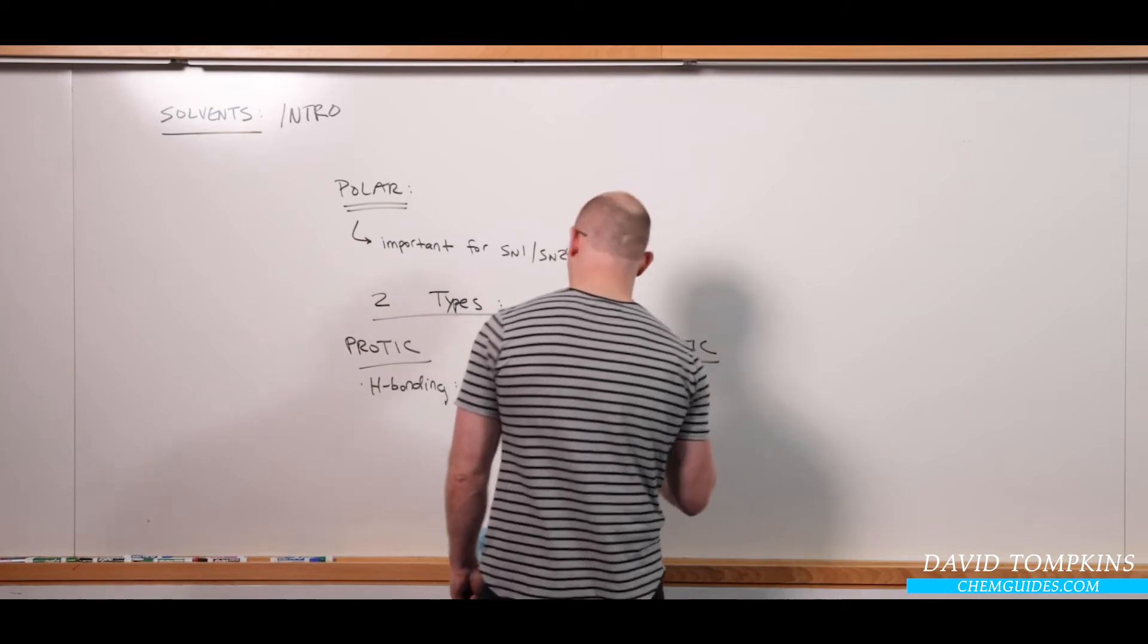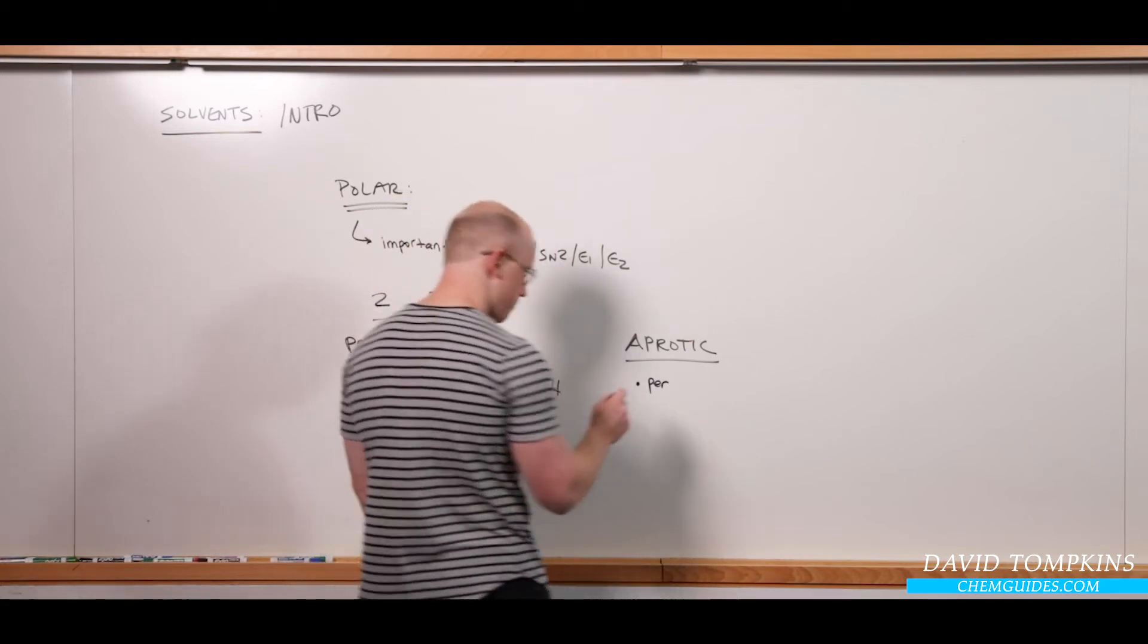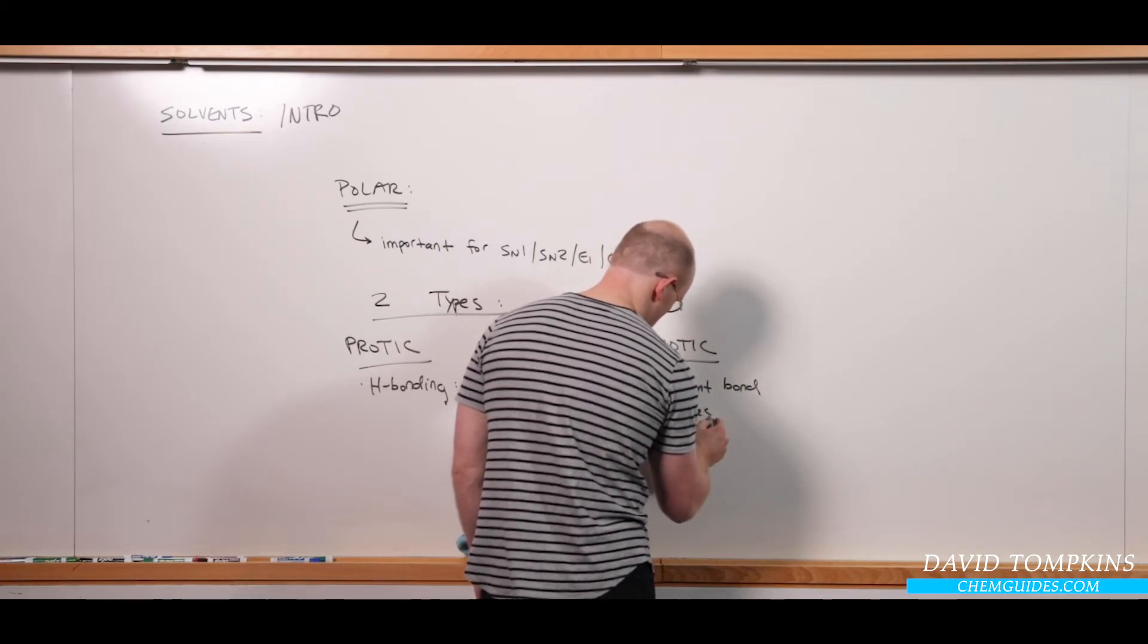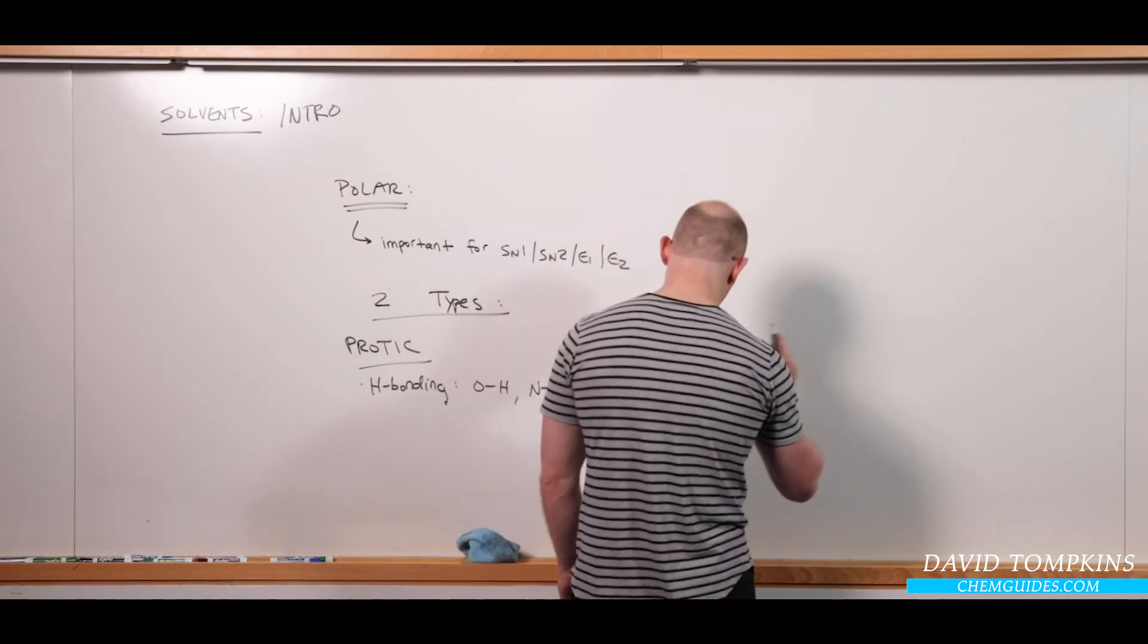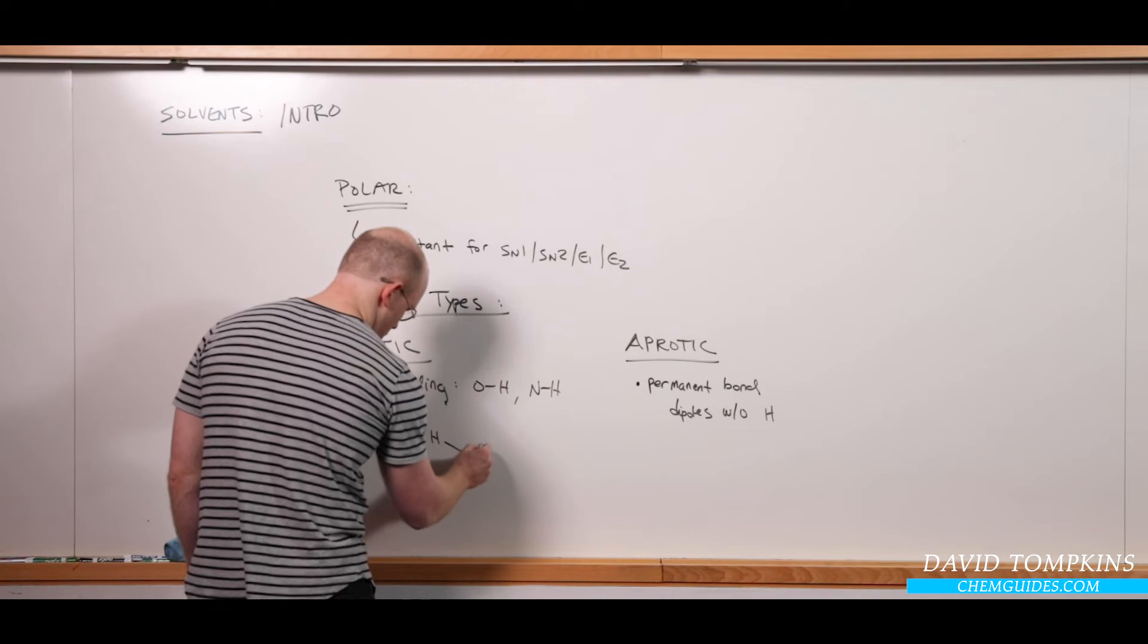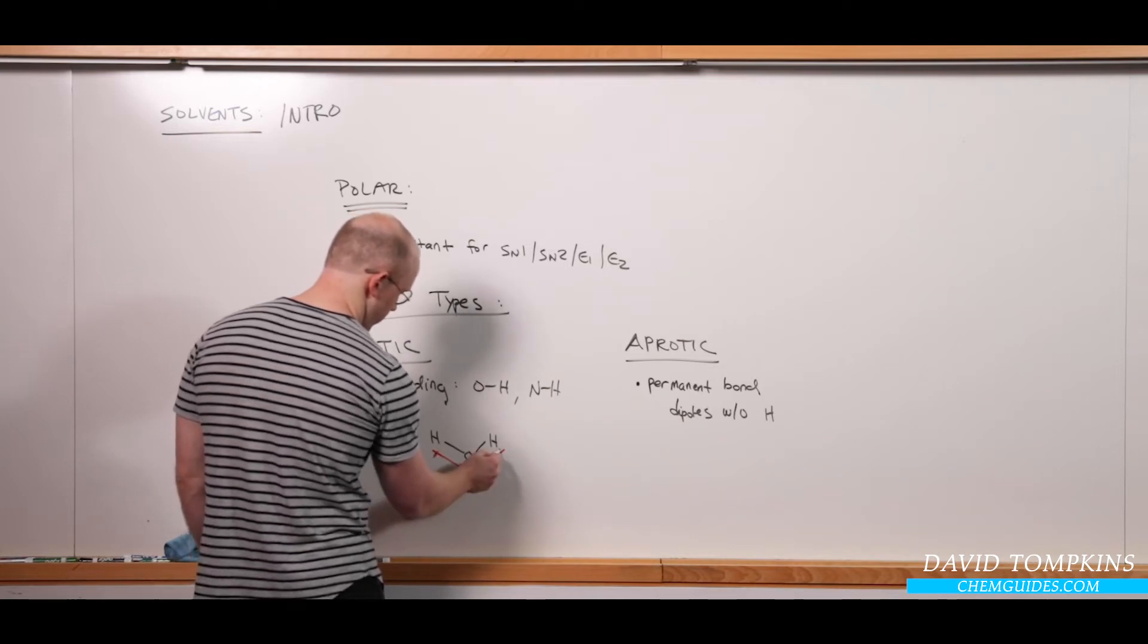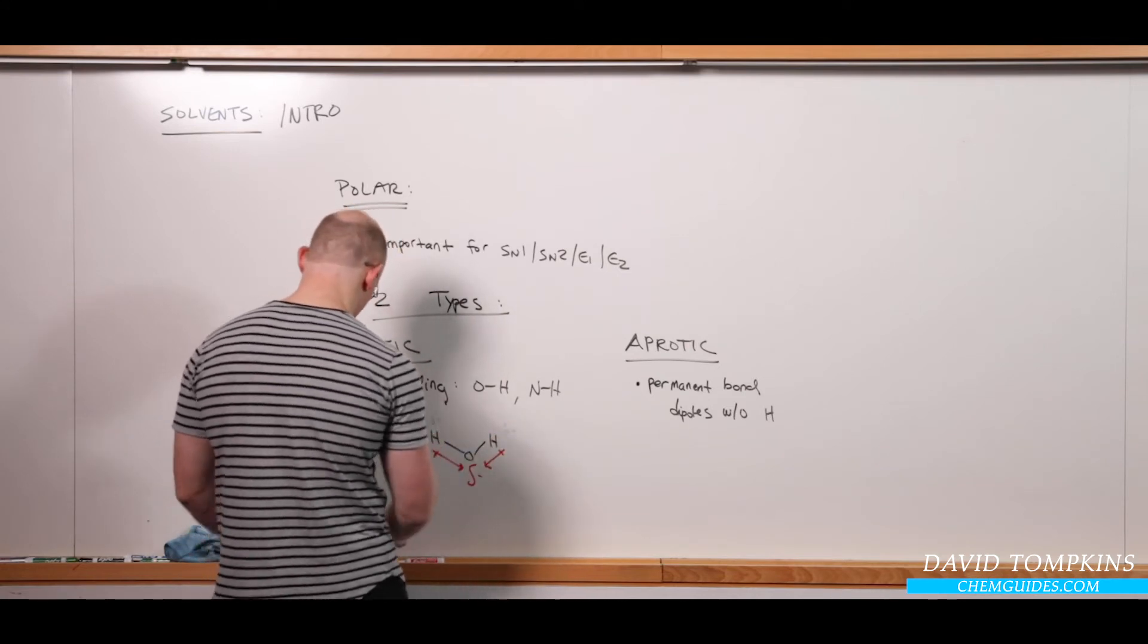Whereas aprotic solvents, these have permanent bond dipoles, but they do not include a hydrogen atom. So we'll say permanent bond dipole without a proton. So I'll give you an example. A protic solvent, most common, of course, is water, has two very polar OH bonds favoring an excess of electron density at the oxygen atom and leaving electrophilic or acidic character at the protons.